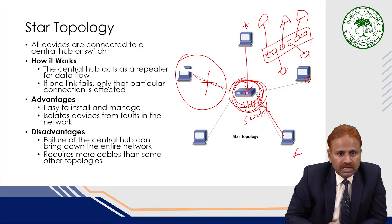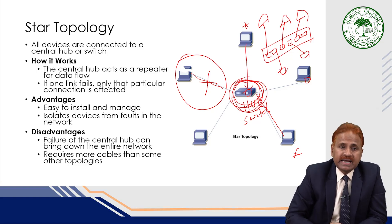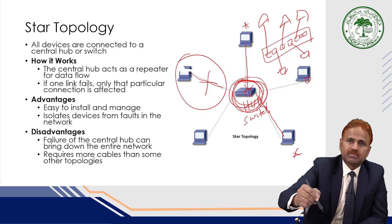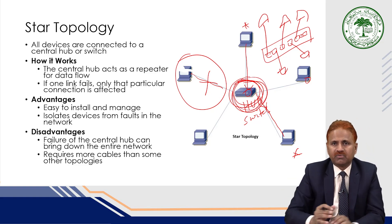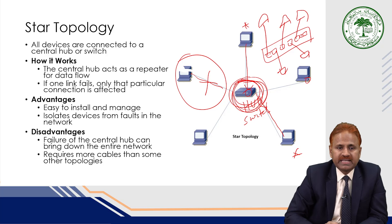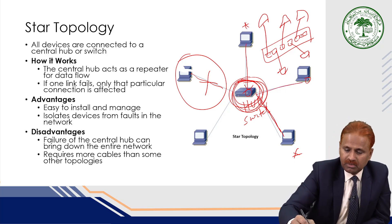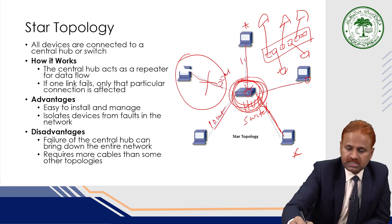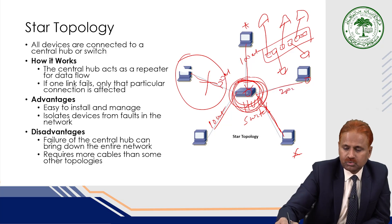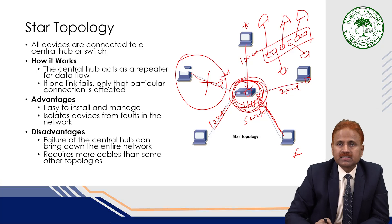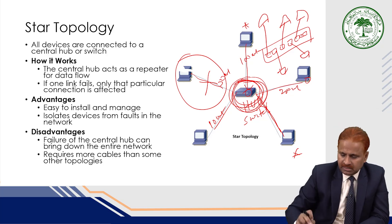The main disadvantage is that the failure of the central hub can bring down the entire network. Another disadvantage is that it requires more cables than some other topologies. For example, if computers are 10 meters, 50 meters, or 100 meters away, individual cables of those lengths are required for each connection.